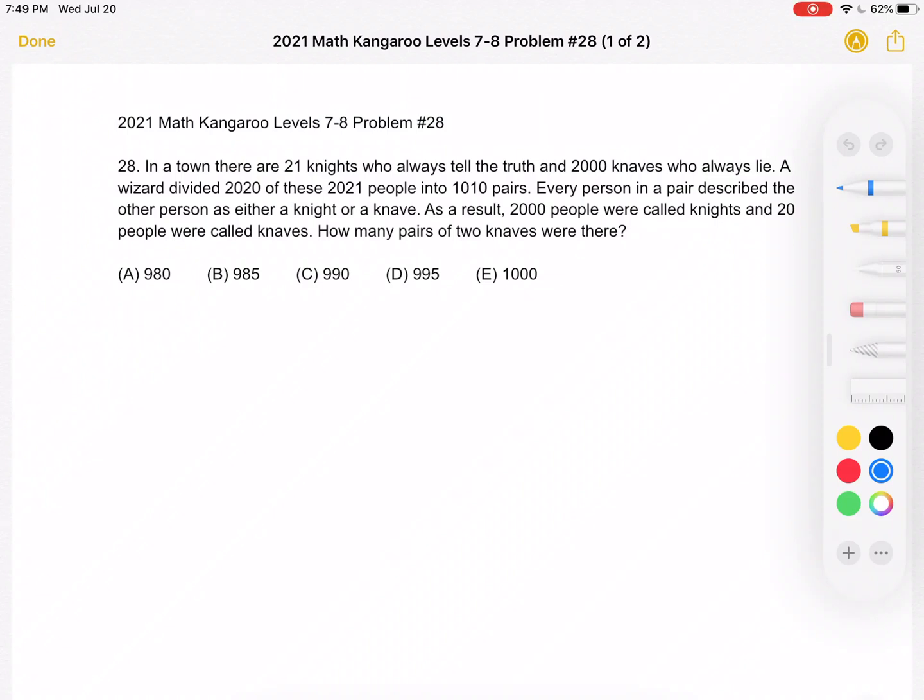This is the 2021 Math Kangaroo Level 7-8 Problem Number 28. In a town, there are 21 knights who always tell the truth and 2,000 knaves who always lie. A wizard divided 2020 of these 2021 people into 1,010 pairs. Every person in a pair described the other person as either a knight or a knave. As a result, 2,000 people were called knights and 20 people were called knaves. How many pairs of two knaves were there?